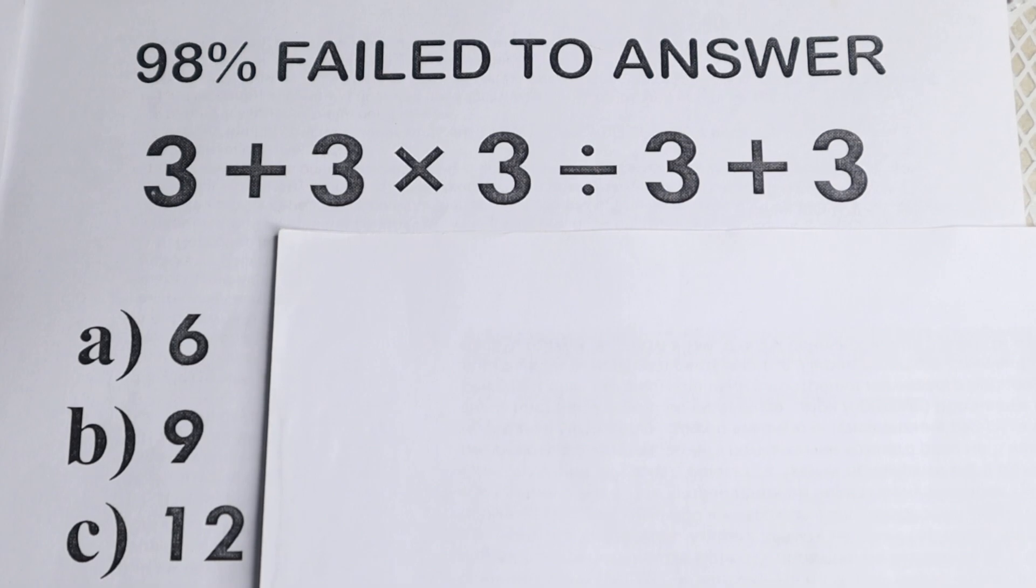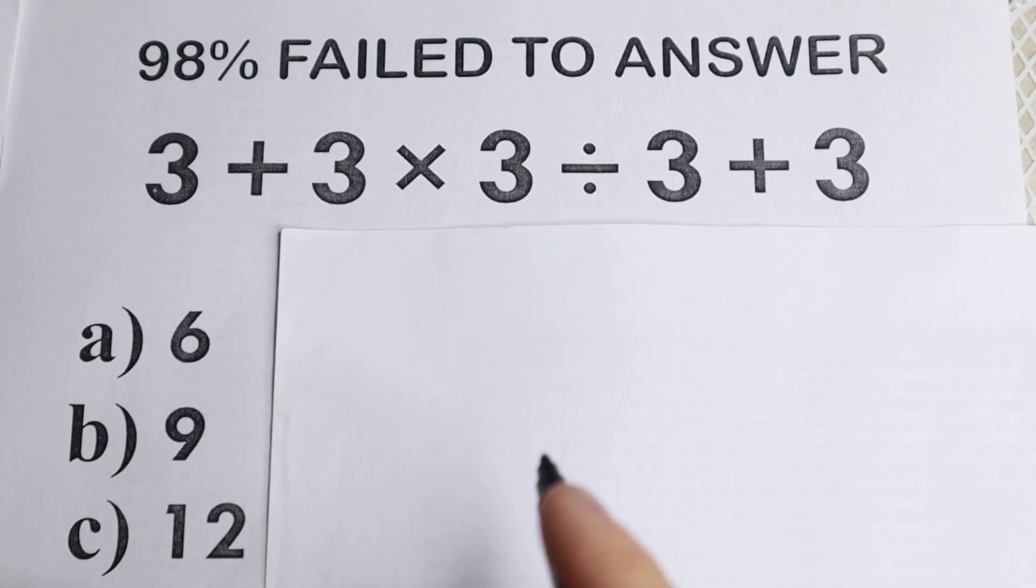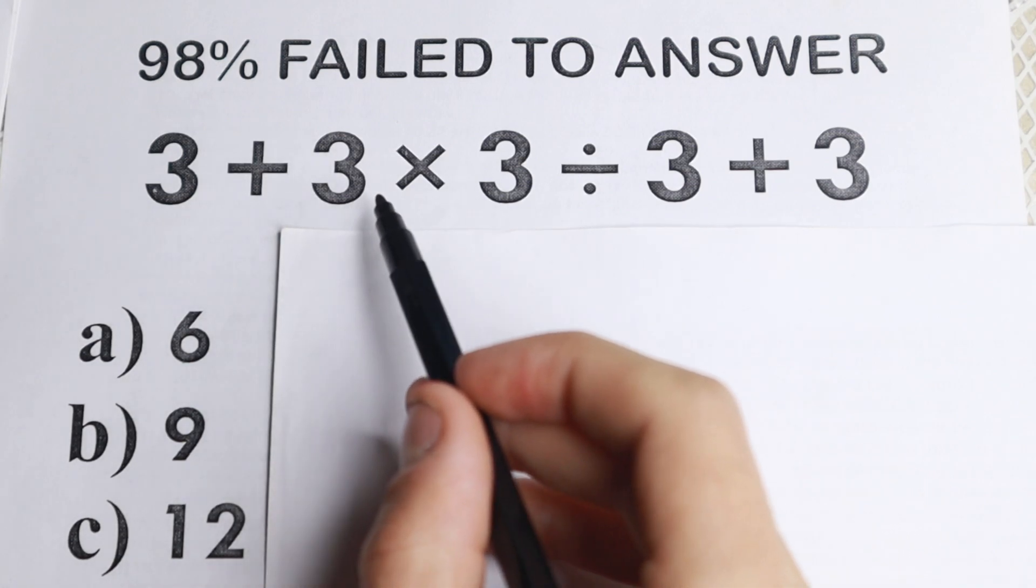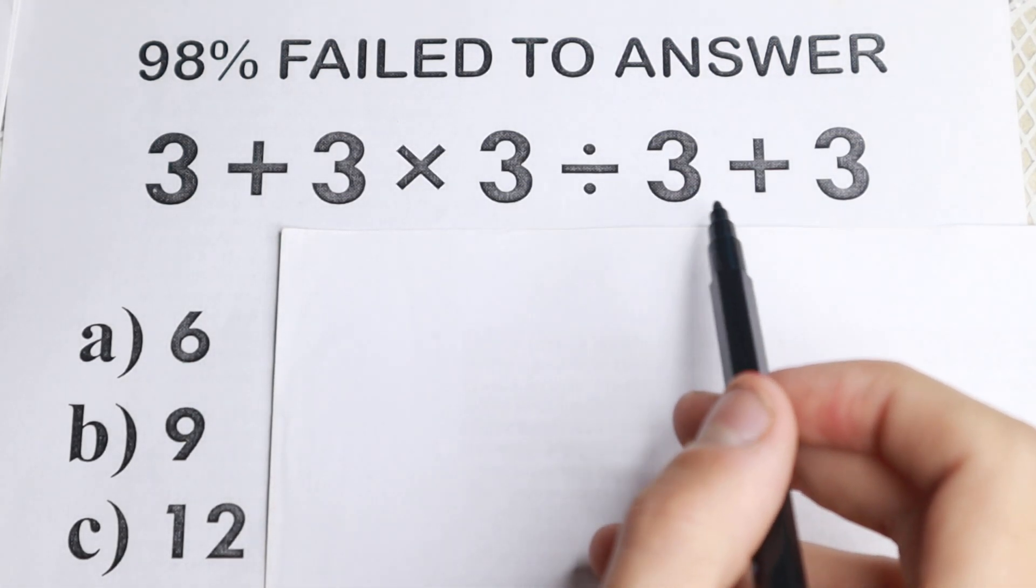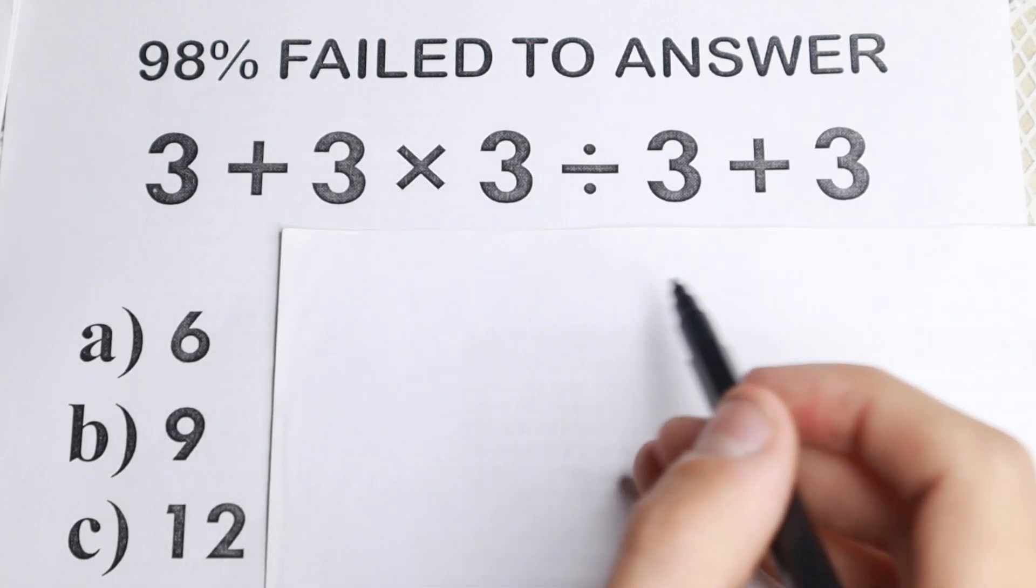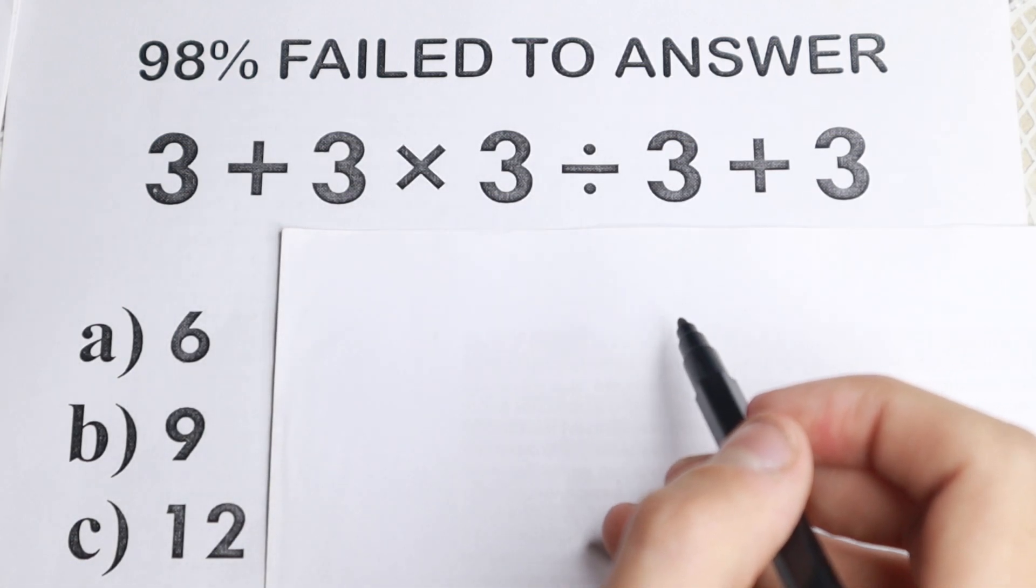Hello everyone! In this video we are going to do a very simple math problem and you're going to be surprised that many of you are actually going to get this wrong. So I don't want you to use your calculator and here is the problem. So 3 + 3 × 3 ÷ 3 + 3. So no huge number, only addition, multiplication and division and that's it and we need to solve it.